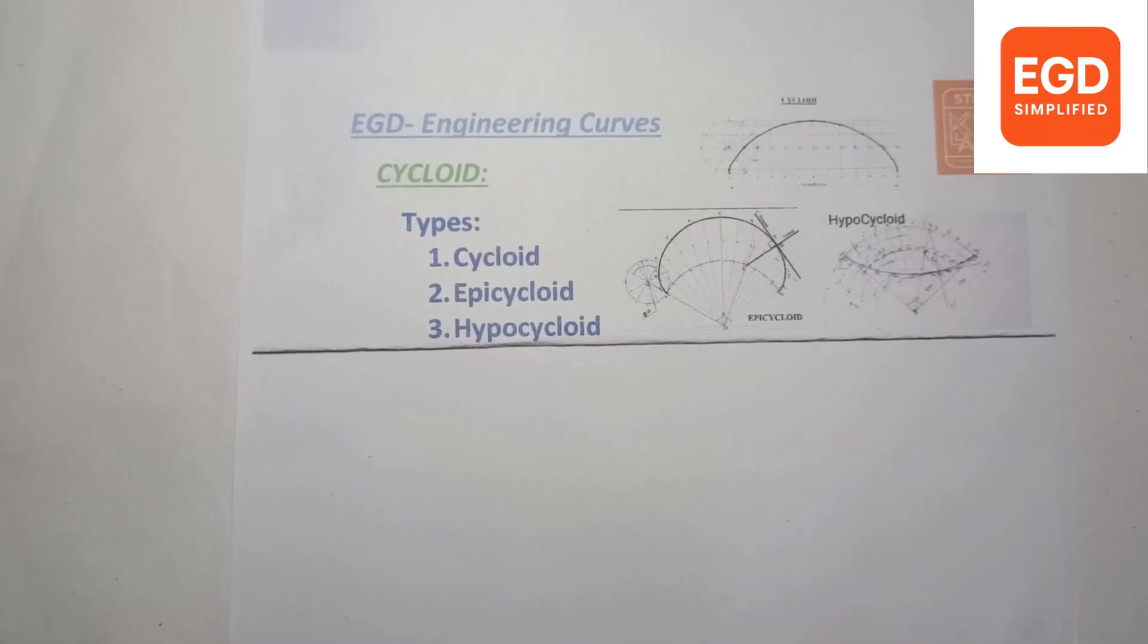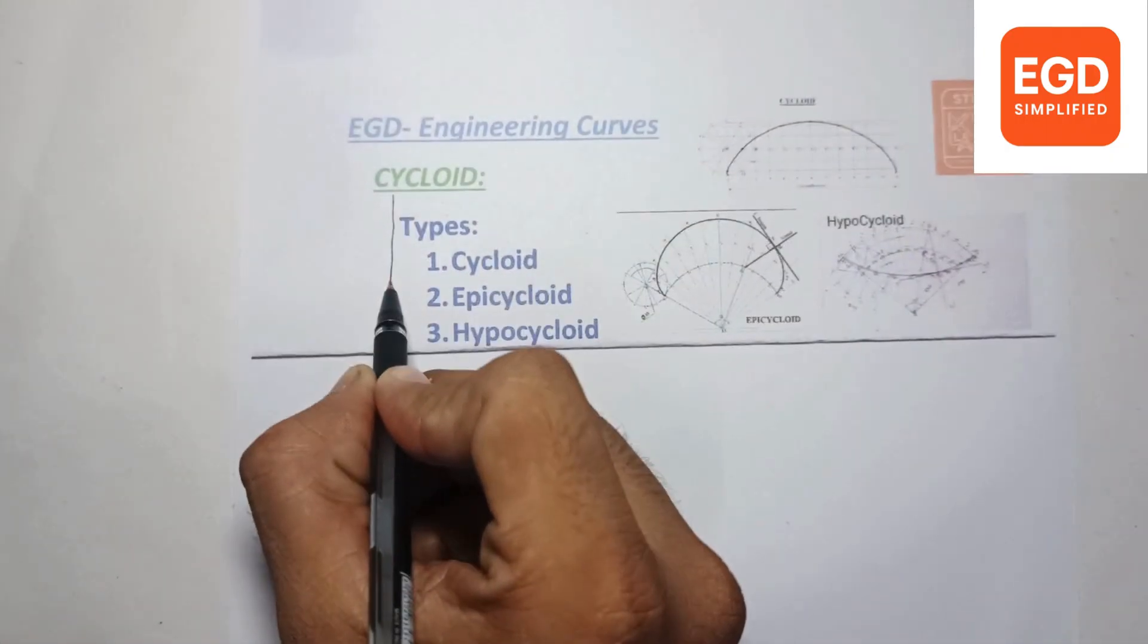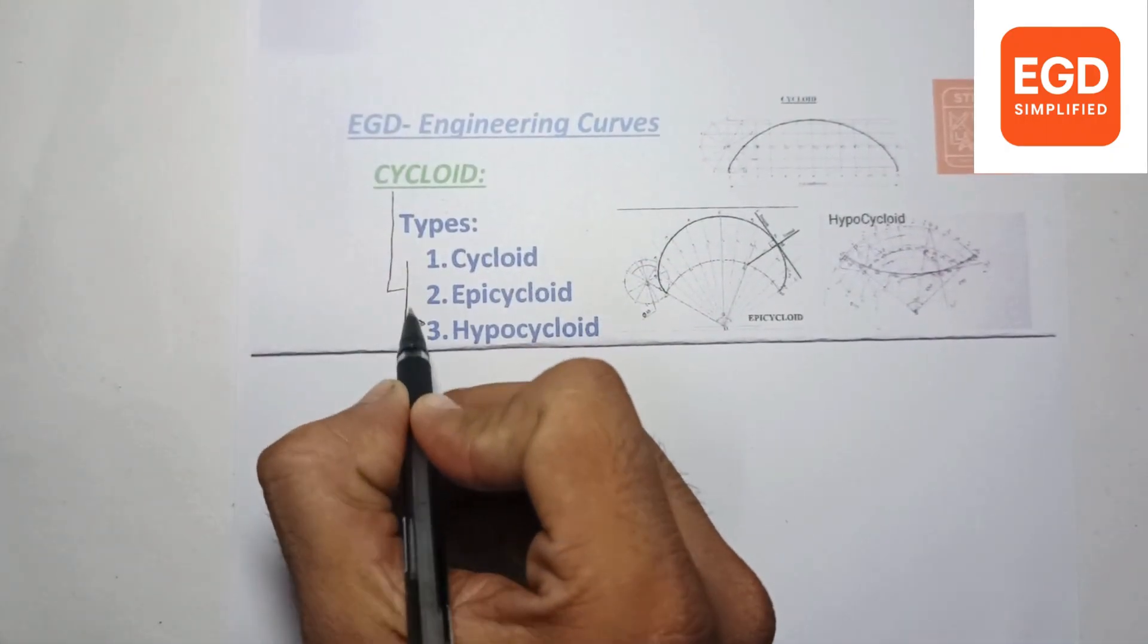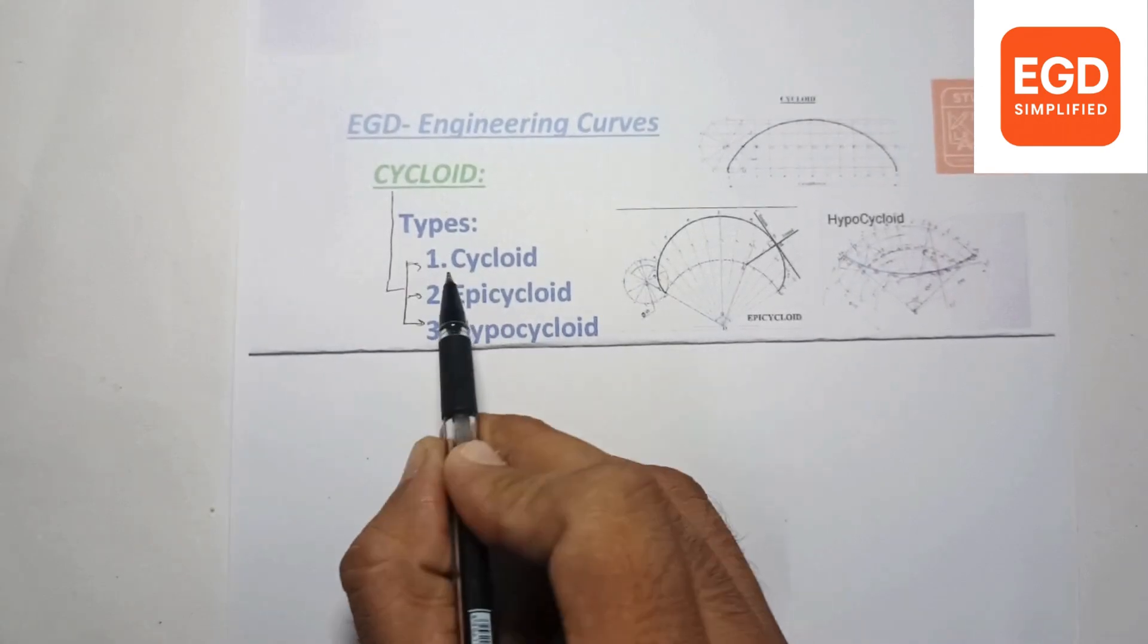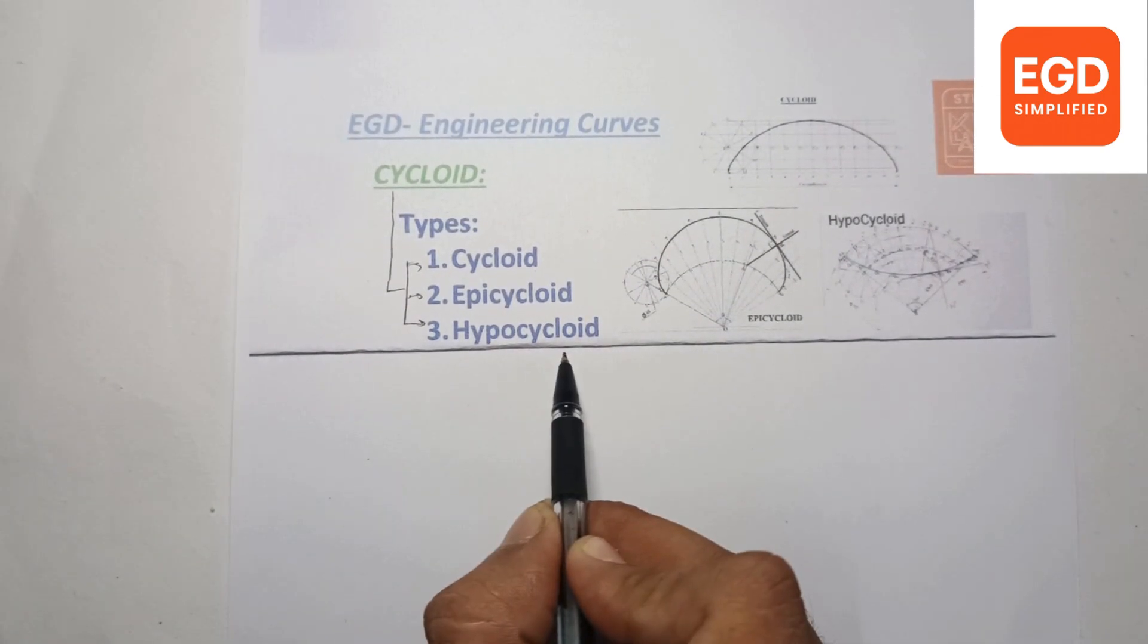Our next engineering curve is cycloid. The cycloid has three types: first one is cycloid, second is epicycloid, and third one is hypocycloid.